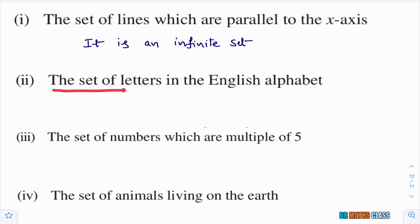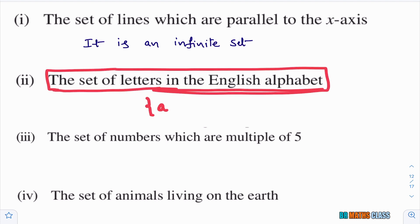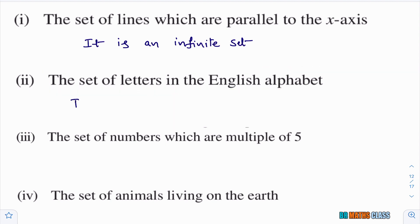Second bit: the set of letters in the English alphabet. The English alphabet has letters A, B, C, ... X, Y, Z — total 26 letters. It is a finite set because the set contains a finite number of elements.